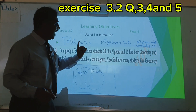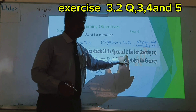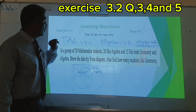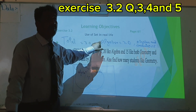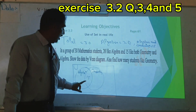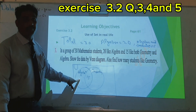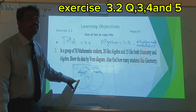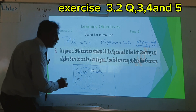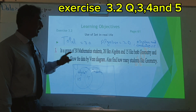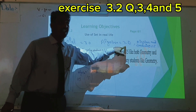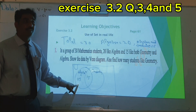How many like both? 15 — so I write 15 in the middle. Now, total students who like algebra is 20. 15 are those who like both algebra and geometry, so how many like only algebra? We write 5 here. Why? Because total students who like algebra are 20, and 15 plus 5 equals 20.